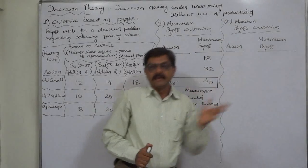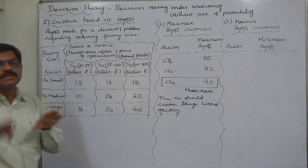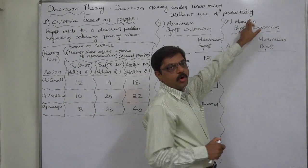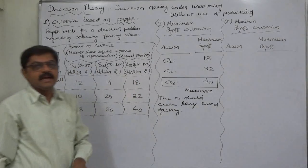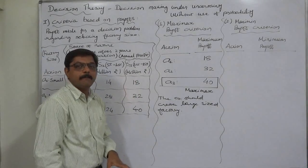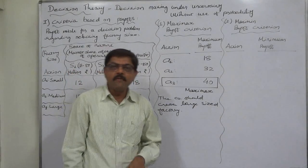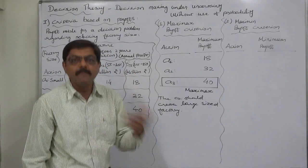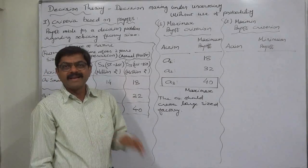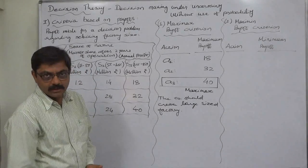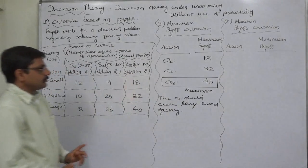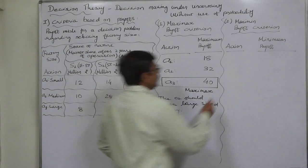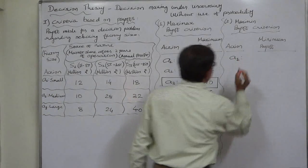Now let's discuss about the second payoff criterion, that is maximin. It is somewhat balanced approach. Maximin is maximum of the minimum, that means the company has or the management has a balanced approach. They want to maximize the profit out of the minimum possible profit, so they want maximum out of the minimum possible. For this purpose, to use this criterion, we have first to make a list of minimum payoff of all the actions or strategies or alternatives available.